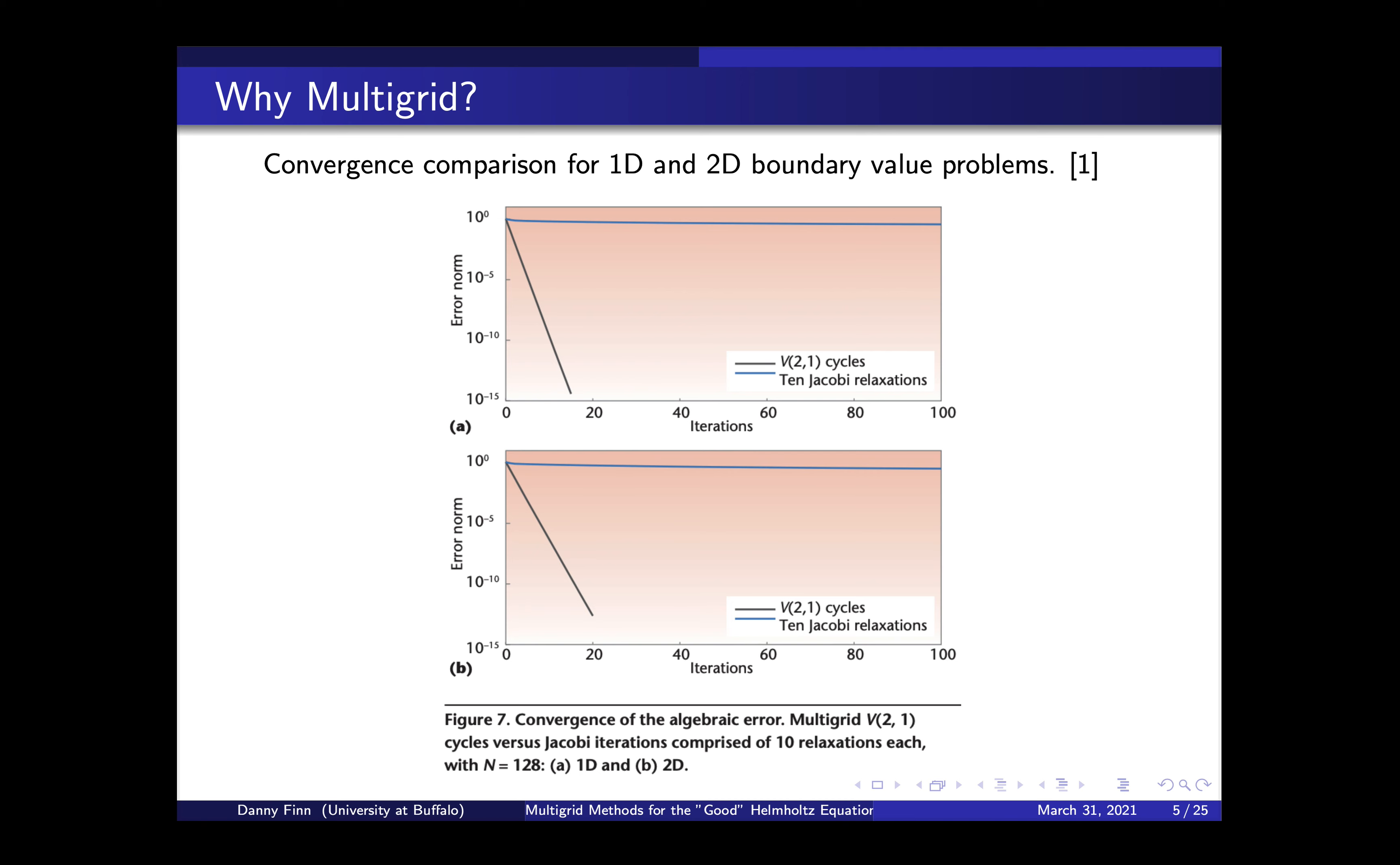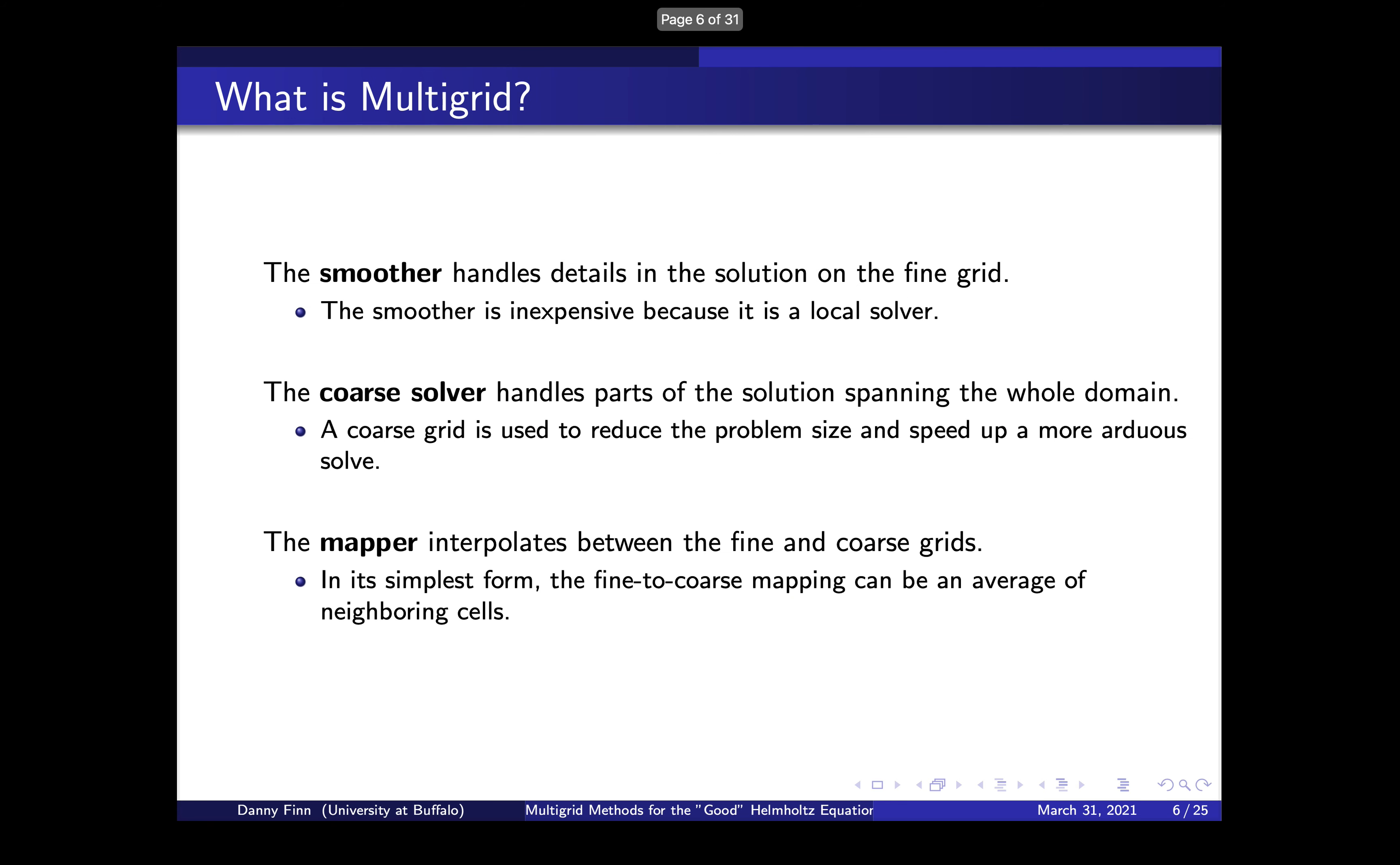And multigrid converges within 20 iterations for 1D on top and 2D on the bottom. So it represents a massive speed up in our runtime. And when our problems are really large, this is really important. Doing something like Jacobi on something that has N by N is a million by a million is just unreasonable. So this is a really big speed up for that. Like I said, there's three components to this. There's a smoother, which handles details on the fine grid. The smoother is something inexpensive like a Jacobi method on the fine grid because we're only really interested in local solutions.